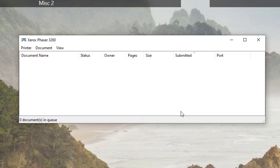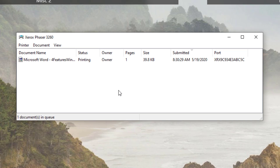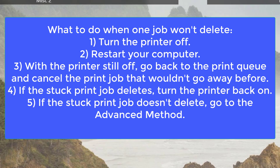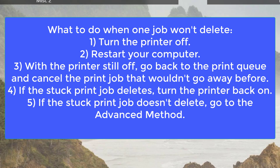However, that's not always the case. Sometimes one document will be left and just won't delete. When that happens, here's what to do: 1) Turn the printer off. 2) Restart the computer. 3) With the printer still off, go back to the printer queue and cancel the print job. 4) If the stuck job deleted, turn the printer back on. If the stuck job doesn't delete, go to the Advanced Method.